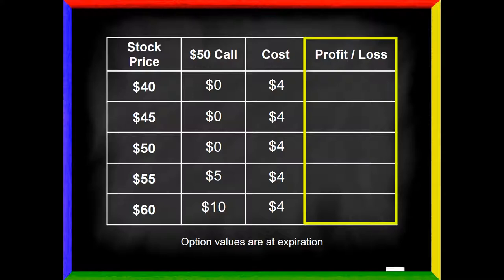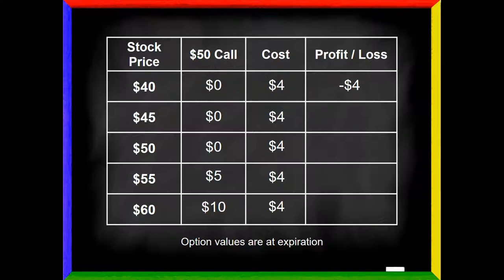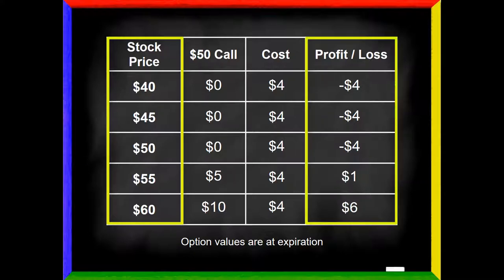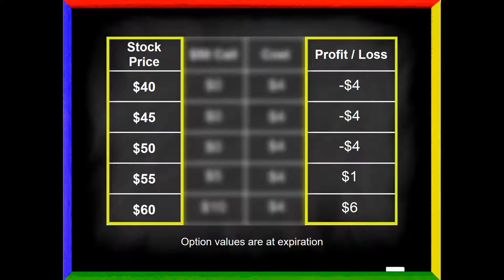The final column is the profit and loss. We take our revenues from selling that call to close it, minus our cost. If the stock is 40, I receive zero and I paid $4, leaving a $4 loss. At 45, also a $4 loss. At 50, still a $4 loss. At 55, I receive $5 from selling the call and paid $4, so I have a $1 profit. If the stock is 60, the 50 call is worth $10 — I sell it for $10, paid $4, and I have a $6 profit. To construct our graph I need only the stock price column and the profit and loss column.